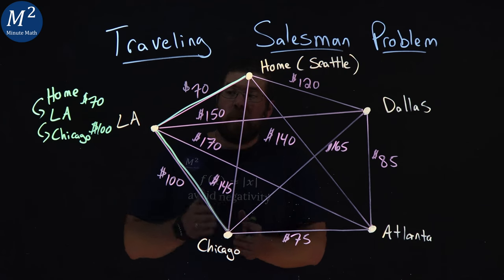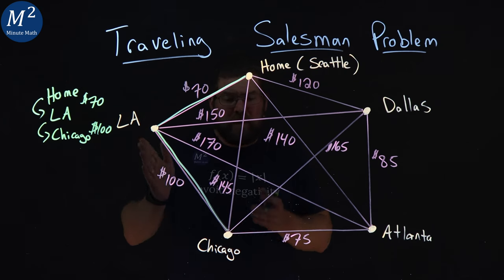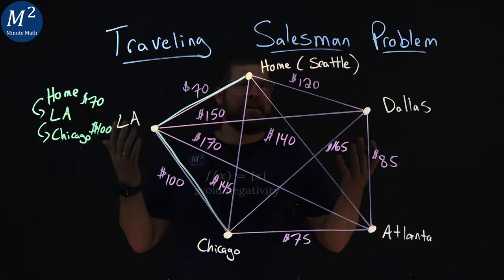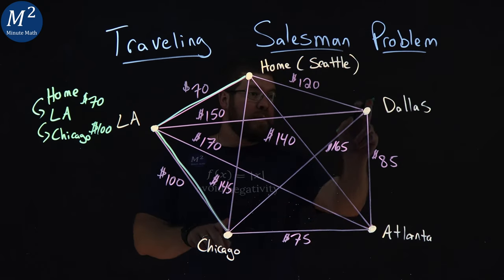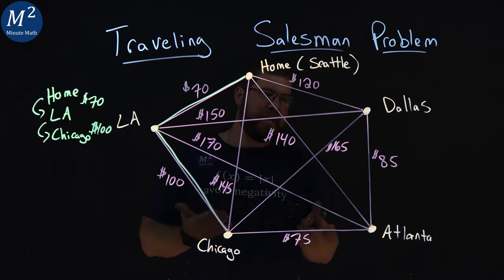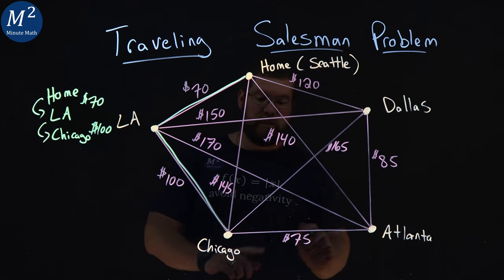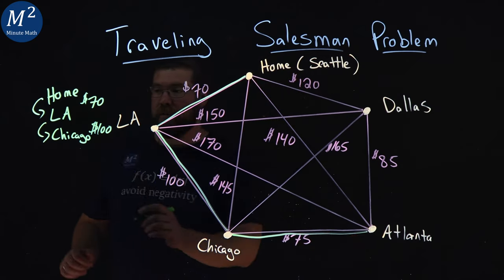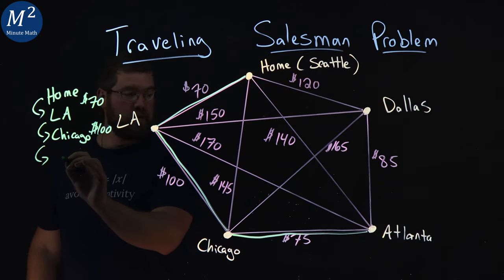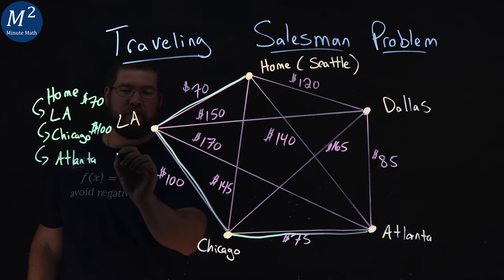Once we're in Chicago, we cannot go back to LA. We've already been there, and we cannot go back home because we haven't visited every single city. So our options here are going to Dallas or Atlanta, and it looks like the Atlanta flight's the cheapest. So we can go here to Atlanta. It was $75. So we go from Chicago to Atlanta. And that's $75.